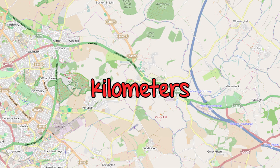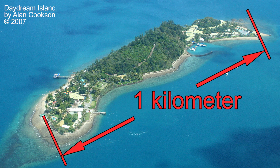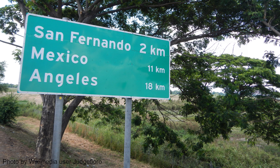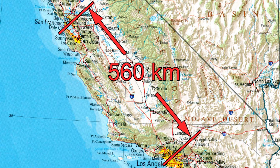For even larger distances, such as along roads, we use kilometers. A kilometer is 1,000 meters. This Australian island is 1 kilometer long. This roadside sign from the Philippines tells us how far to each town — the KM means kilometers. The distance from LA to San Francisco is 560 kilometers.